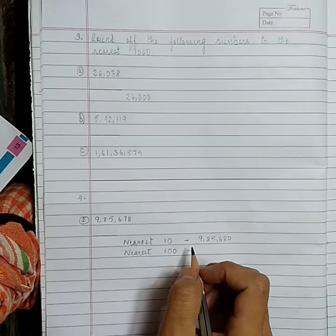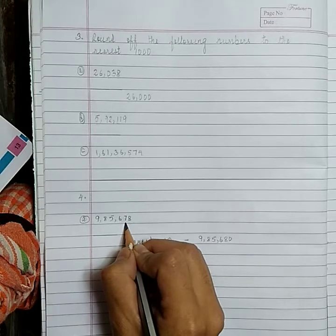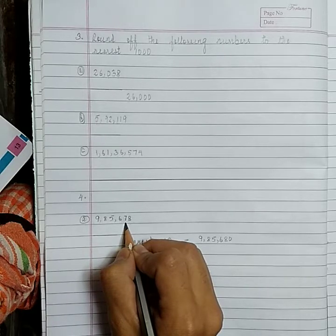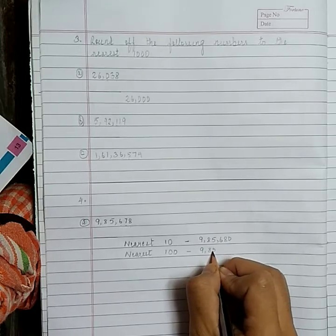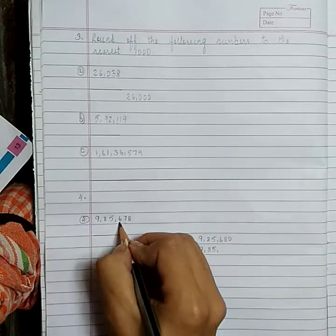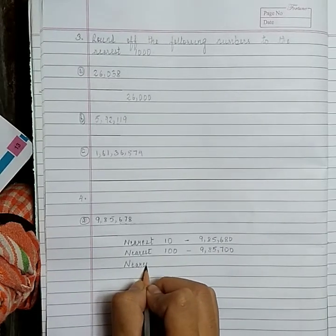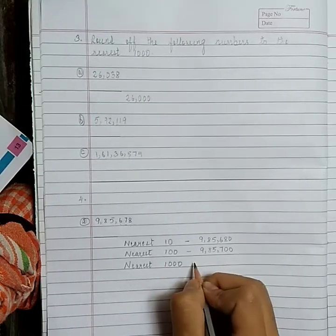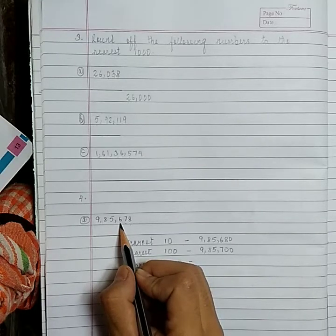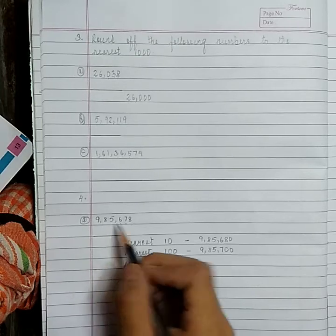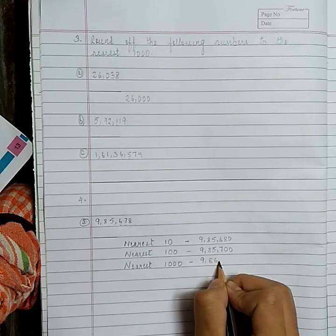To the nearest 100: The answer will be 9,85,700. To the nearest 1,000: We look at the 100th place. 6 is greater than 5, so we add 1 to the 1,000th place. The answer will be 9,86,000.